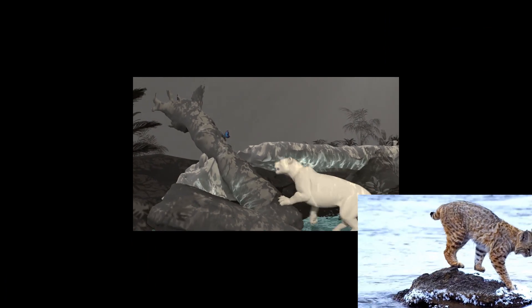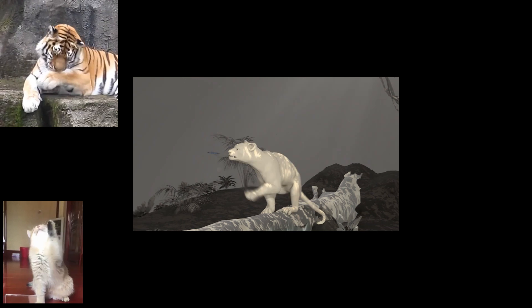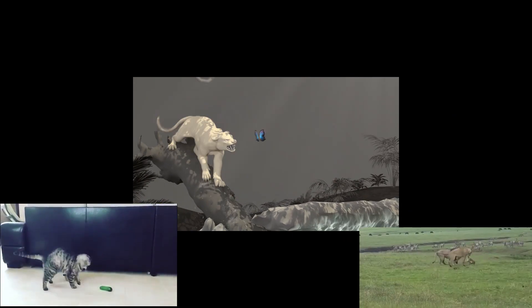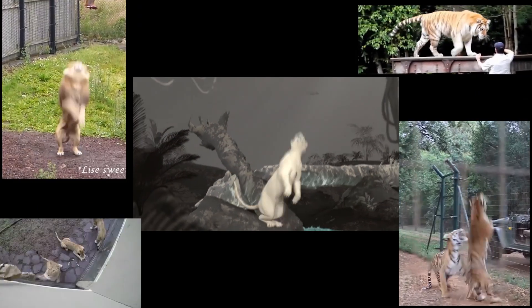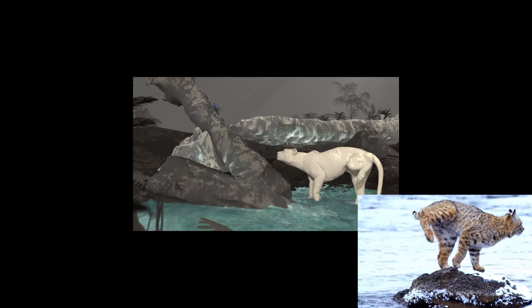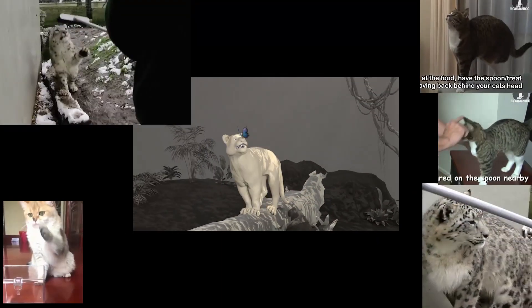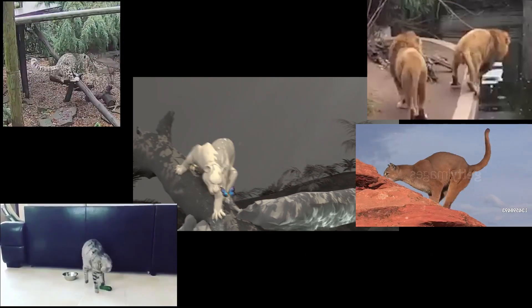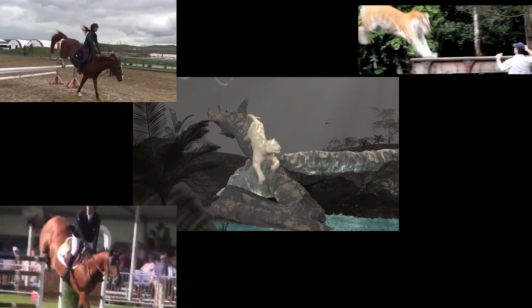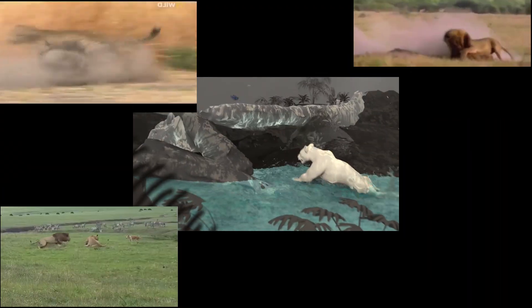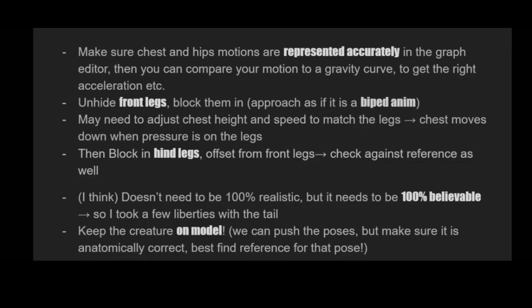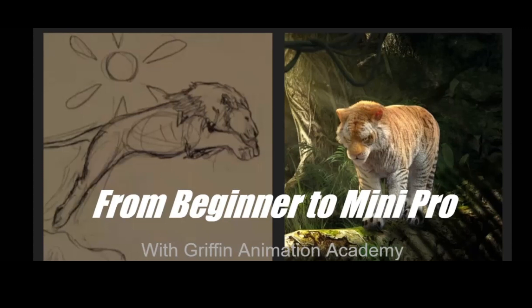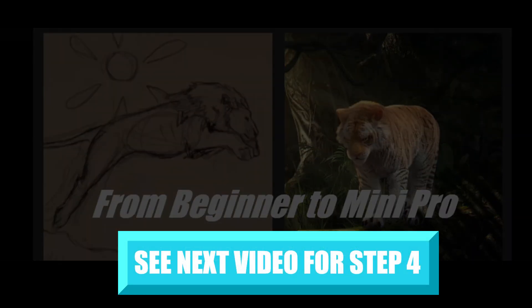It's also important to keep the creature on model — this is something Eddie went back to often in the class. You can push the poses, but sometimes they went out of proportion or you couldn't find that in reference as something a cat would actually do. It's good to find references for poses you want to hit and try to match that in 3D, keeping it on model so your creature stays believable — not stretching it too far, not compressing too much, not getting strange angles in the neck. That's my mini journey from being a beginner to not so much of a beginner anymore.